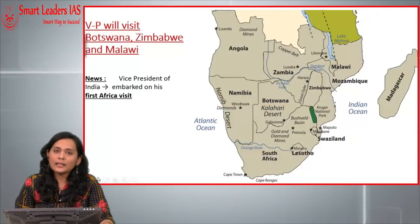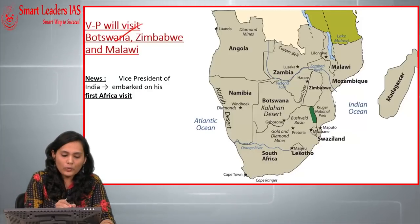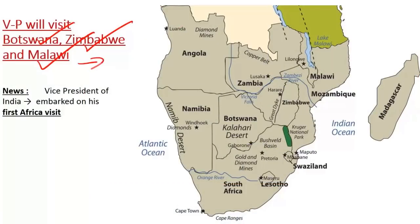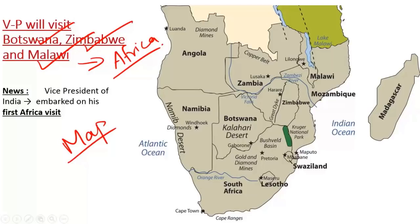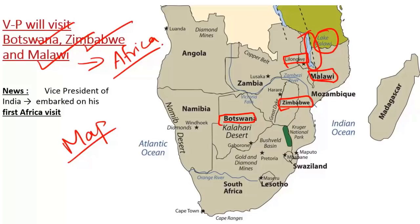The second article covers the Vice President's visit to Botswana, Zimbabwe, and Malawi — all located in Africa. For UPSC prelims, map-based questions require knowledge of where these countries are geographically located and the important physical features associated with them. Malawi's capital is Lilongwe, and an important feature is Lake Malawi, which occupies almost 30% of the country. Malawi is bordered by Zambia, Mozambique, and Tanzania.